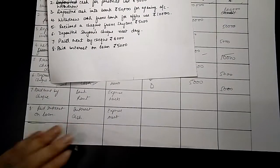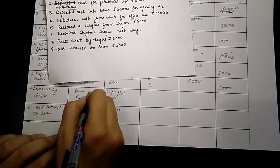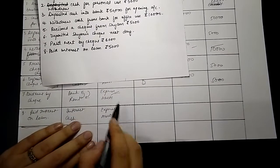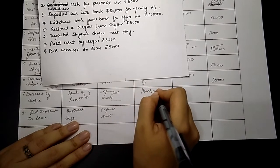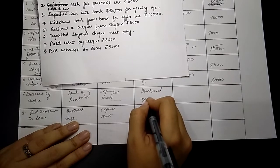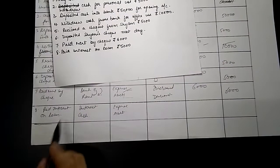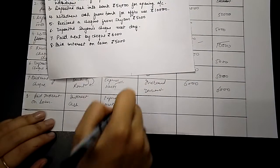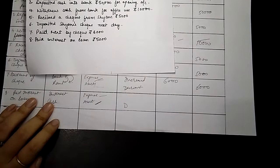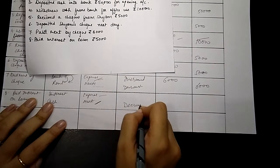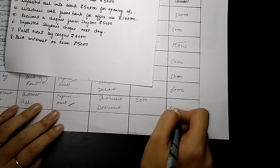Next: paid rent by cheque. Rent is an expense and bank is an asset. The expense is being increased (debit) and the bank is being decreased (credit) with 6,000 each. Similarly, paid interest on loan — interest is an expense for us and cash is being paid (an asset being decreased). So the expense is increased (debit) and cash is decreased (credit) with 5,000 each.